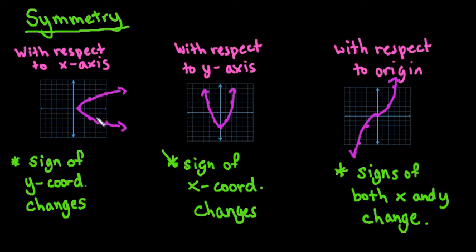Symmetry with respect to the x-axis appears like this. This one would not be a function because you have repeating x-coordinates. You can still have a graph that looks like this, though. It's just not a function.